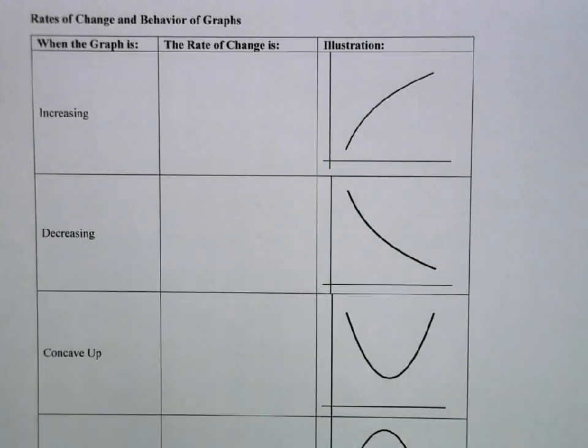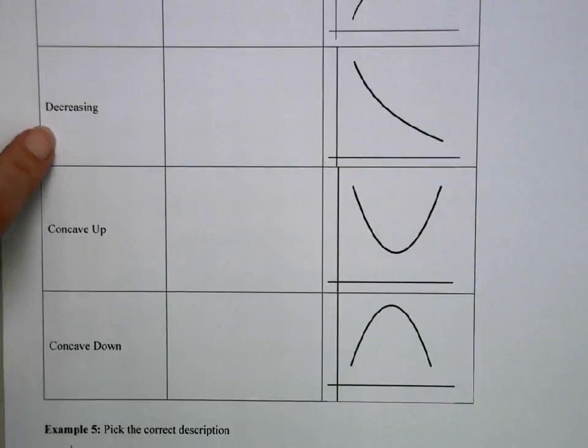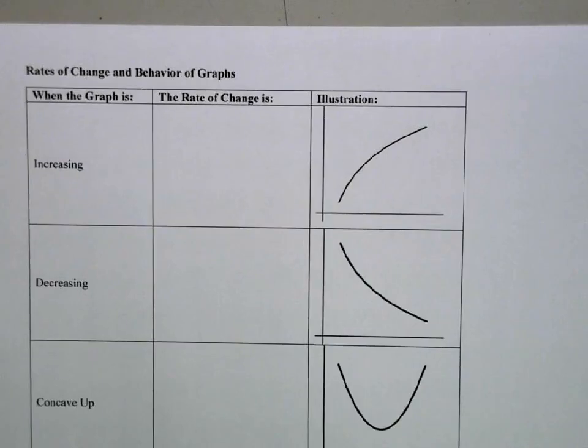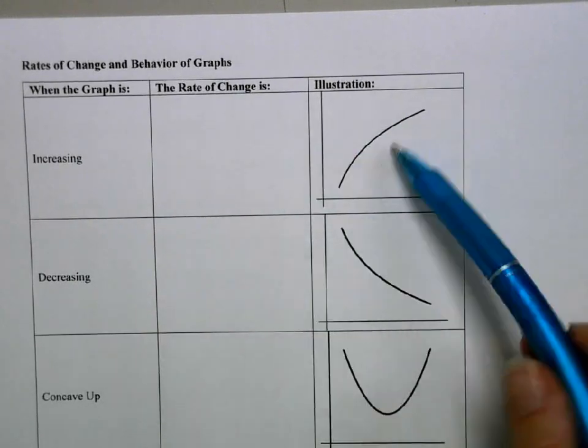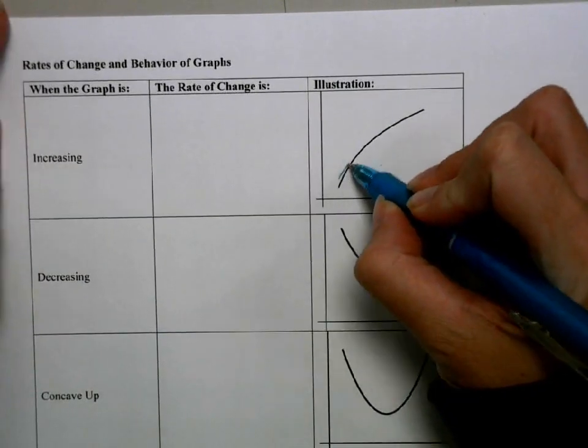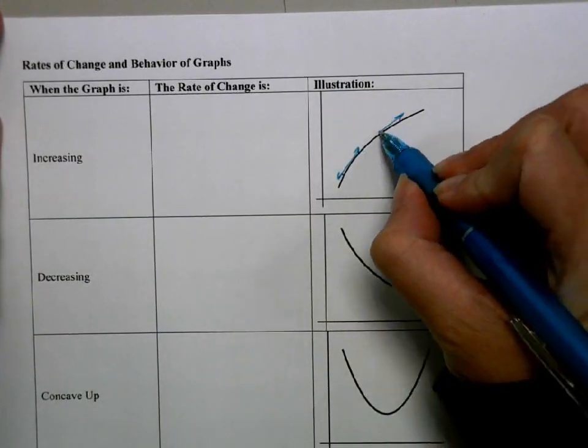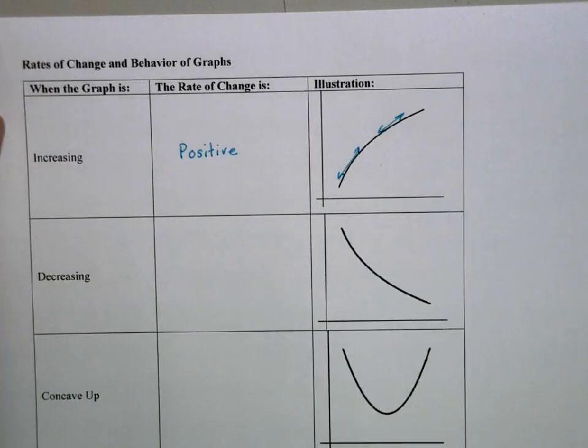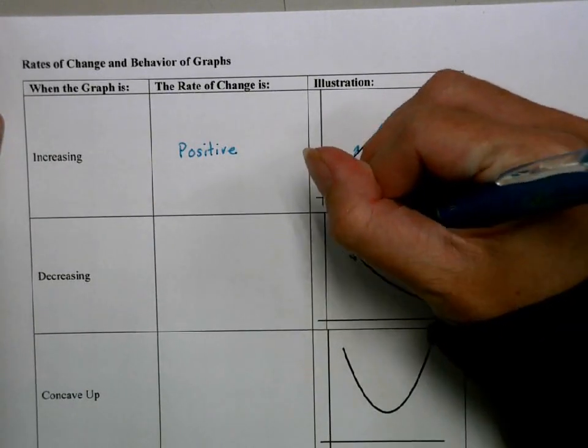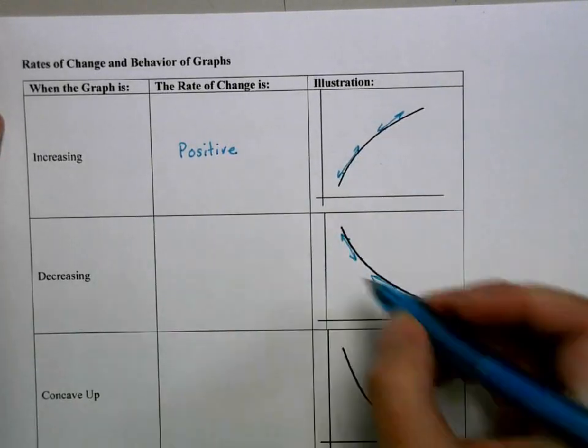Lastly, we're going to talk about how rates of change play into our graphs. This is another big idea: the relationship between what is the graph doing and what is the rate of change doing. So in my chart, we have increasing, decreasing, and then we have concave up and concave down. So increasing, as our x values increase without bound, our y values are increasing without bound. As we go this way, the graph is going up. No matter where I draw a secant line or a tangent line, the slope is going to be positive. So the rate of change is going to be positive when we have a graph that is increasing. Versus a graph that's decreasing, my rates of change are always going to be negative.